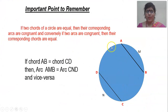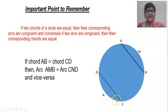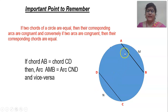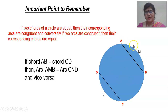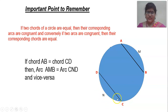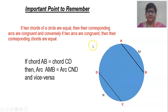This is an important point. In a circle, if there are two chords which are congruent — chord AB and chord CD are equal to each other, meaning the length of these two chords are the same — then the corresponding arc AMB will be congruent to arc CMD, and vice versa. If the arcs are congruent, then the corresponding chords will be equal. You have to remember this statement.